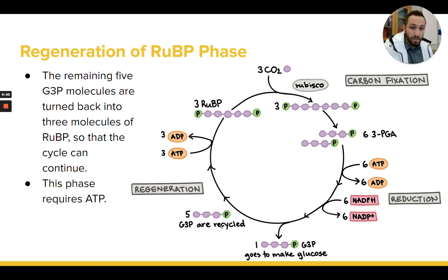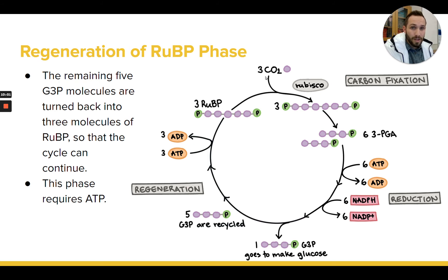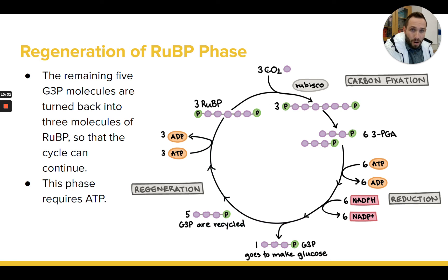Then the cycle can happen another three times with another set of three CO2 molecules, making another set of six G3Ps — one gets to leave, the other five go back to being three RuBiPs. In a somewhat complicated way, this cycle is accomplishing something simple: it's basically just taking three carbon dioxide molecules and putting them together to form one molecule of G3P, which is a three-carbon molecule. Three CO2s go in, one G3P comes out — that's the overall gist of what the Calvin cycle accomplishes.